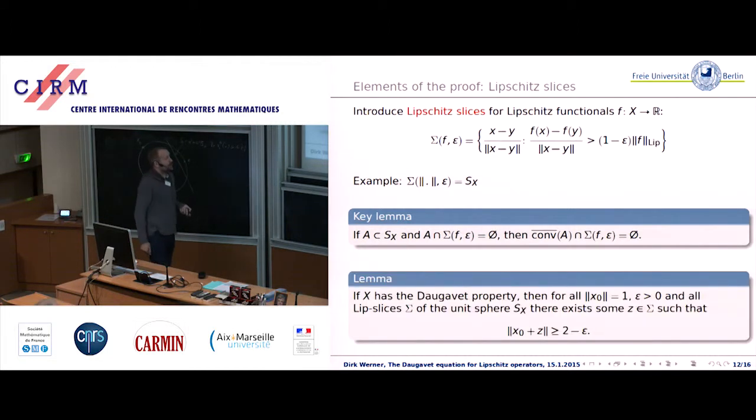With the help of this lemma one proves the analog to this kind of thing. In the linear case, again you have a slice, you have a point, you find something that is in a way close to the boundary of the ball, to the sphere. Verbatim the same lemma is true for Lipschitz slices. If it's true for linear slices, it's also true for Lipschitz slices. This gives us a handle on how to approach this by sort of mimicking the linear proof. In the linear proof you have this and then you have this SCD machinery to go to weakly compact or whatever operators.